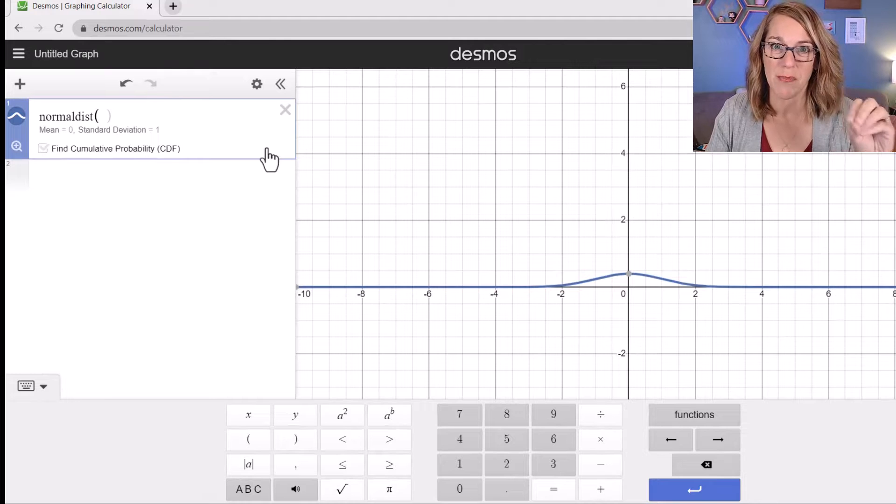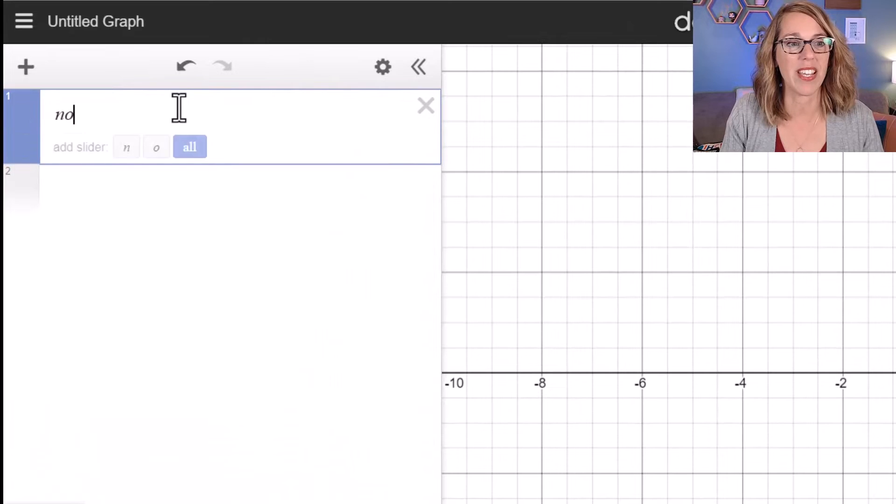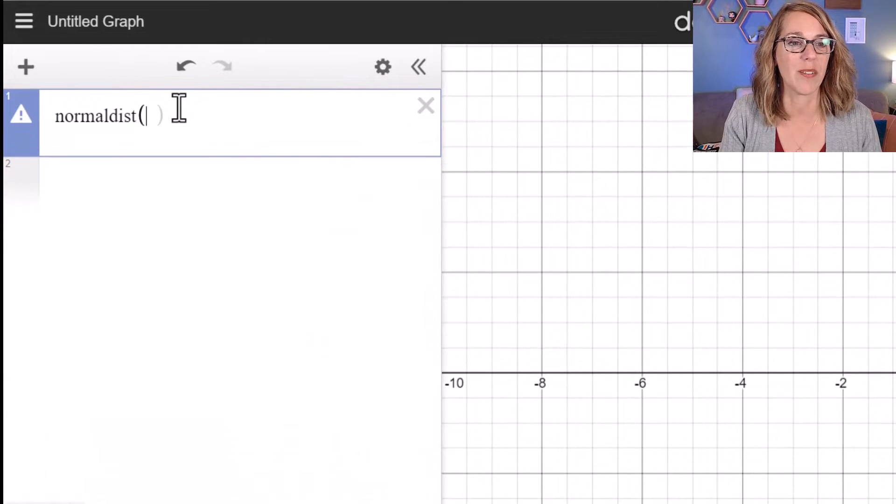I can also get there and notice that it populates it there in my empty cell. If I X this out, I can also get there just by typing in normal dist parenthesis.